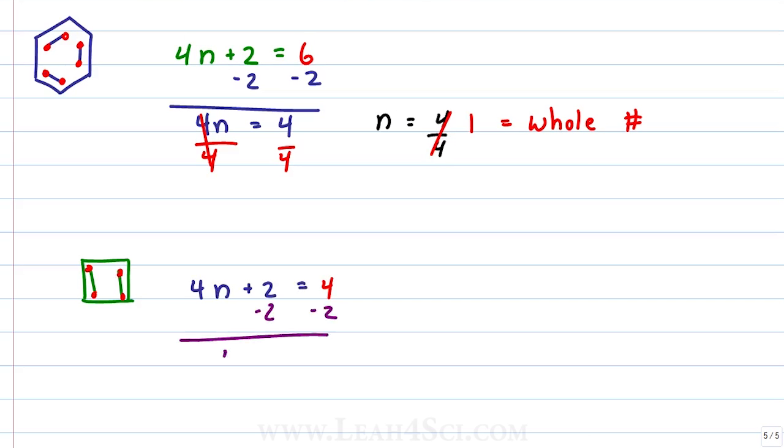Subtract 2 gives me 4n equals 4 minus 2 or 2. Divide both sides by 4 which gives me n equals 2 over 4. 2 over 4 can be reduced to 1 over 2, it doesn't matter which one we use because fact of the matter is 1 over 2 is a half. Half is a fraction and that means this disobeys Huckel's rule.